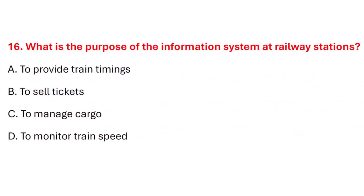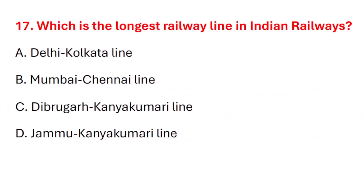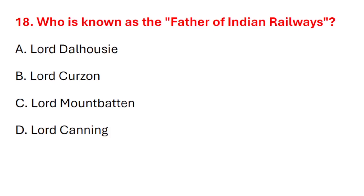Question 16. What is the purpose of the information system at railway stations? Correct answer is option A: to provide train timing. Question 17. Which is the longest railway line in Indian railways? Correct answer is option C. Question 18. Who is known as the father of Indian railways? Correct answer is option A. Lord Dalhousie.